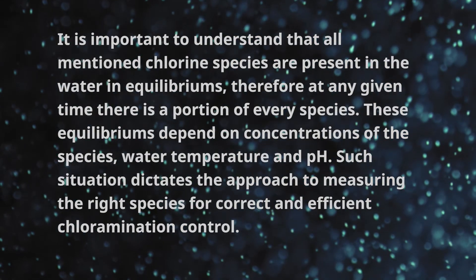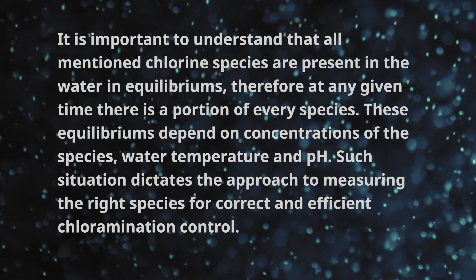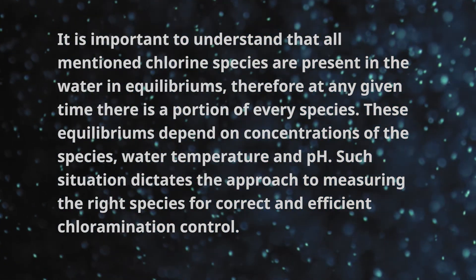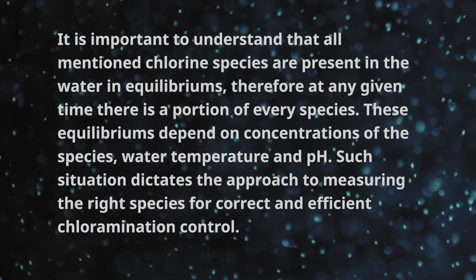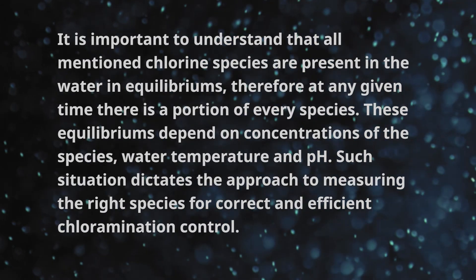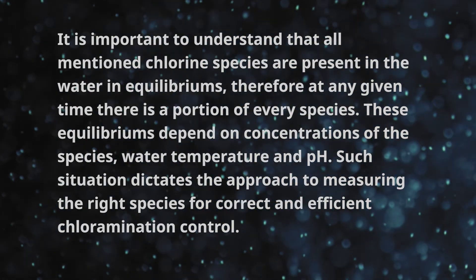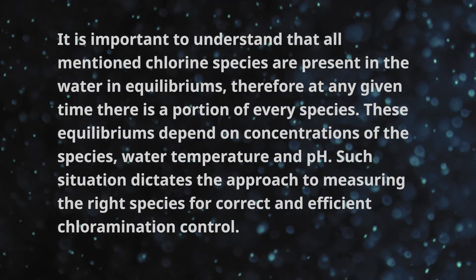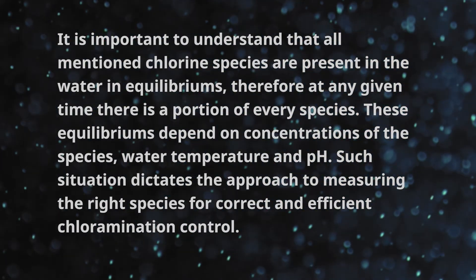It is important to understand that all mentioned chlorine species are present in the water in equilibriums. Therefore, at any given time there is a portion of every species. These equilibriums depend on concentrations of the species, water temperature, and pH. Such situation dictates the approach to measuring the right species for correct and efficient chloramination control.